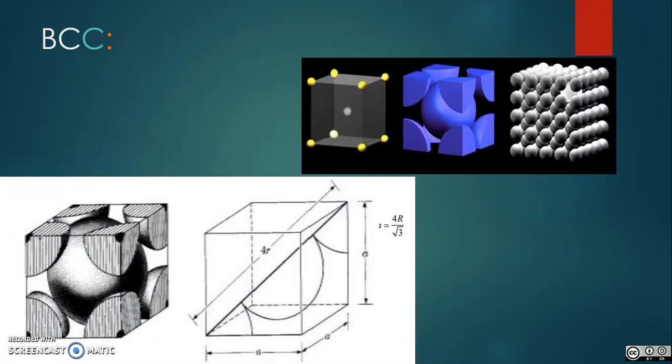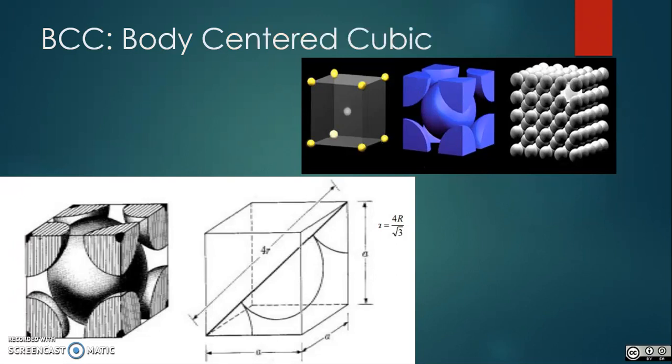BCC structure. Close-packed plane cuts the unit cube in half diagonally. There are two atoms in one unit cell.